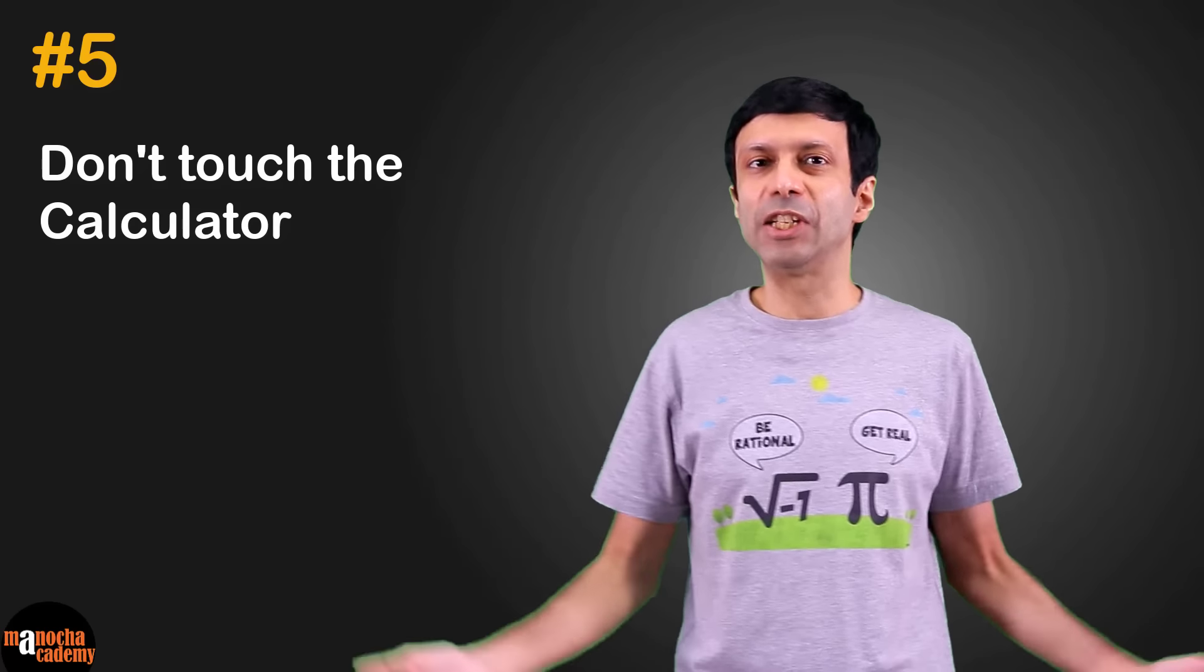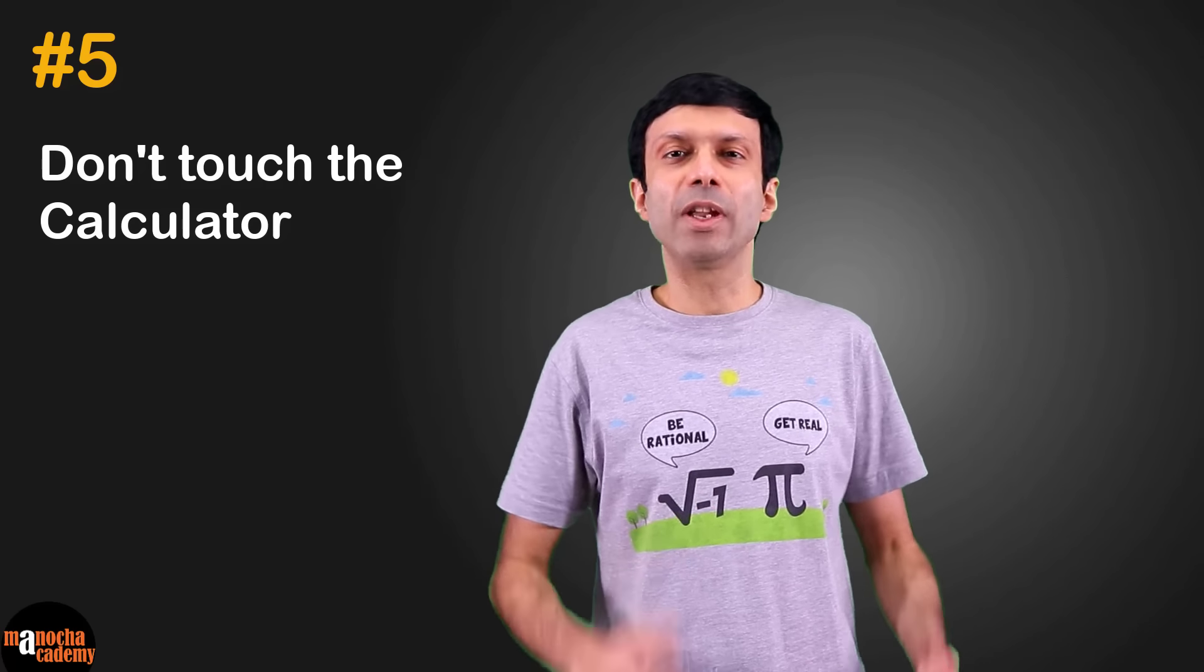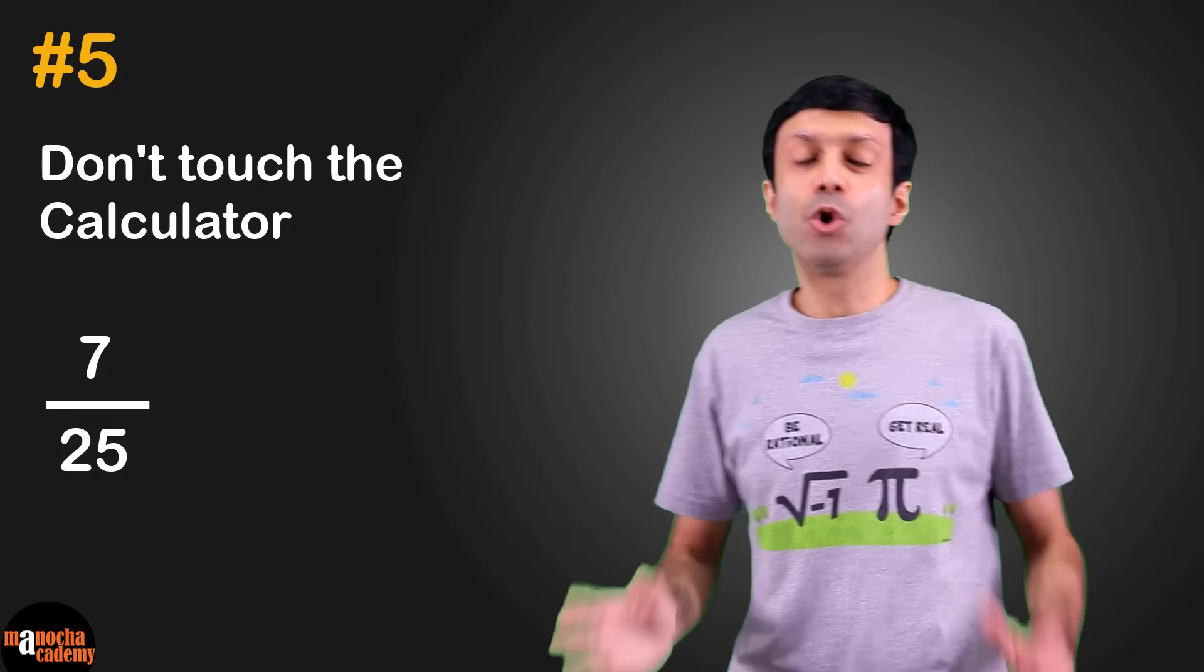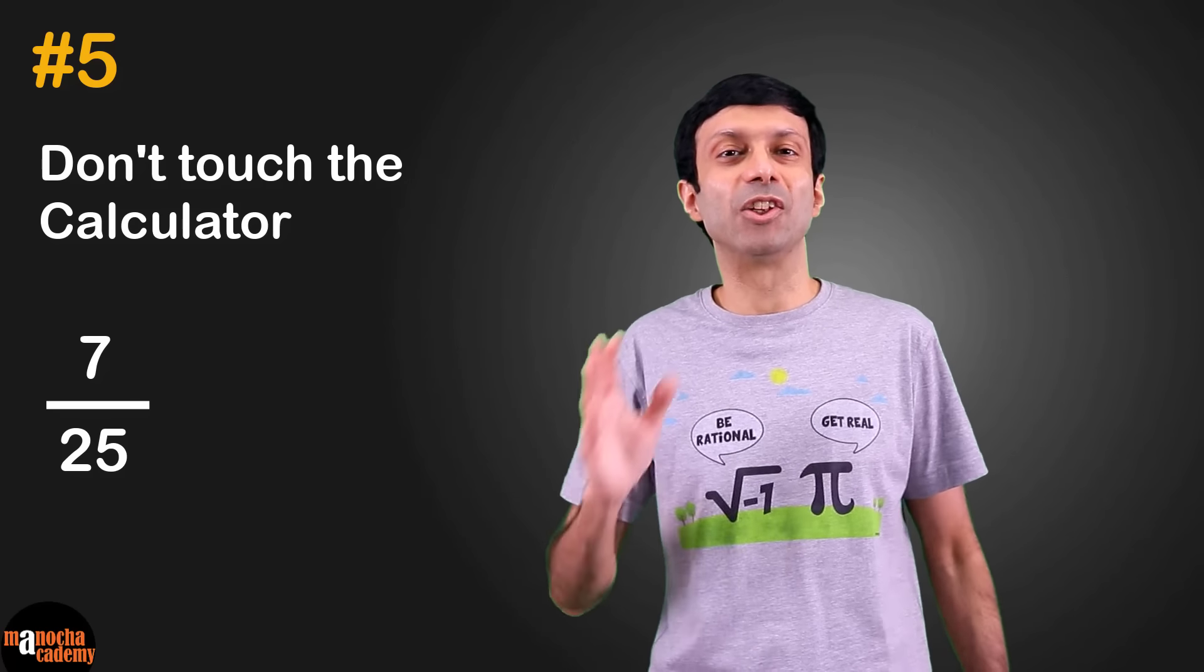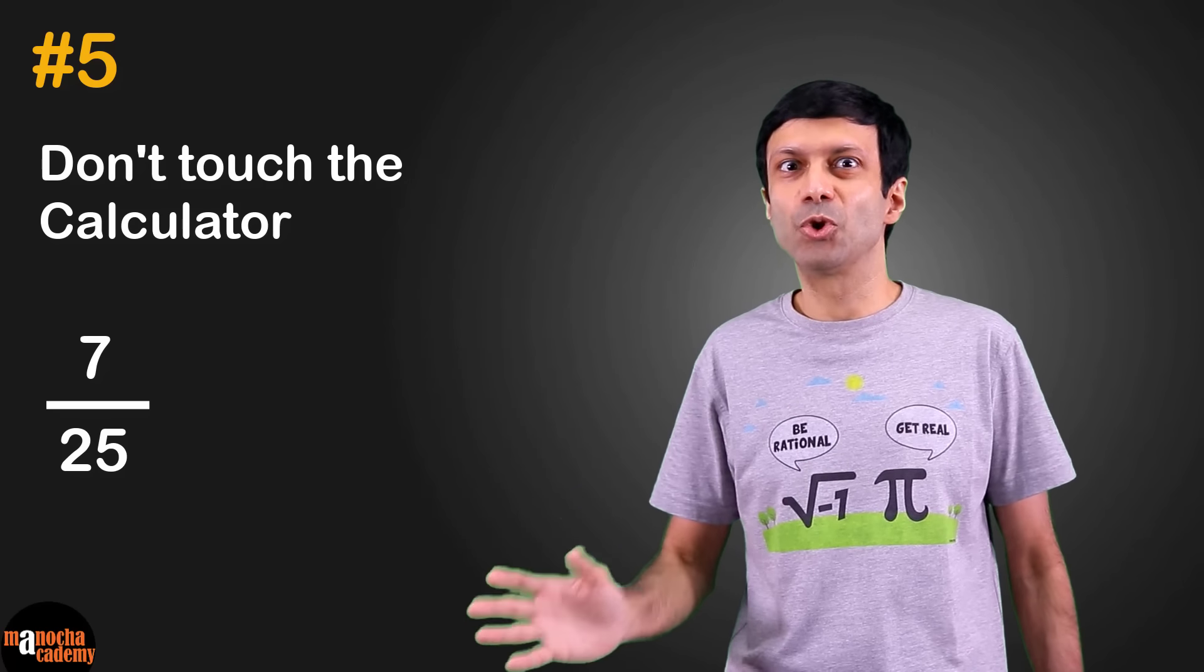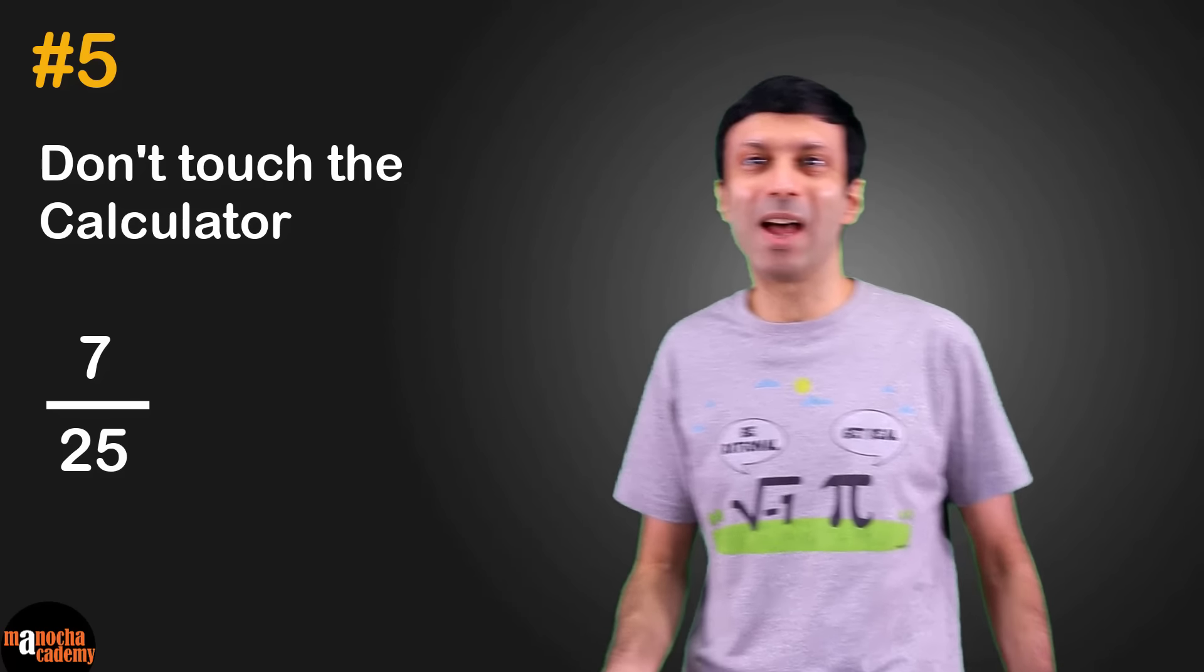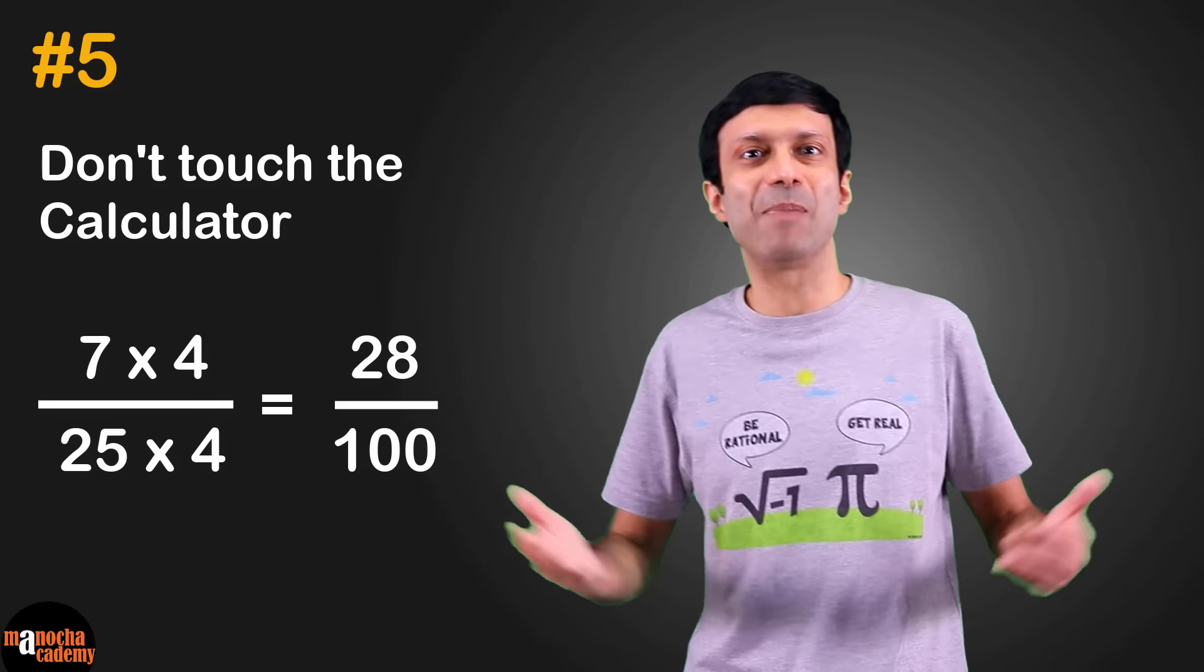For example, let's say you have to calculate 7 divided by 25. Don't start by doing the division. We can easily convert the 25 to 100 so it will be easy to find the decimal answer. So multiply the numerator and denominator by 4, so we get 28 by 100 and the answer is 0.28.